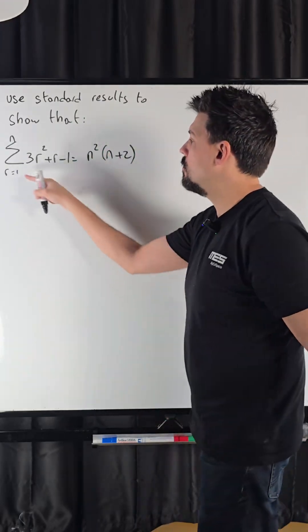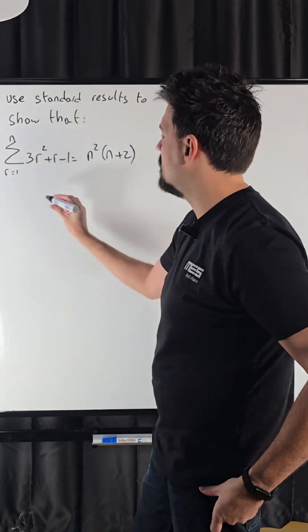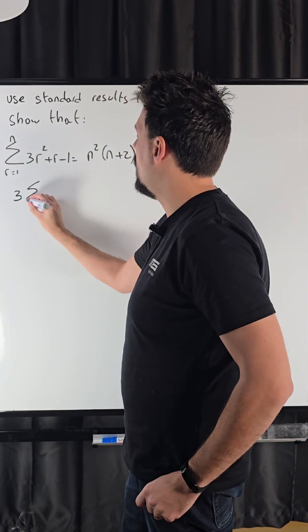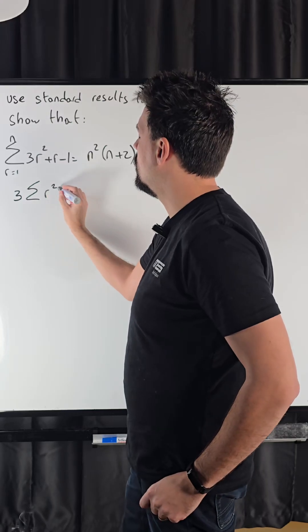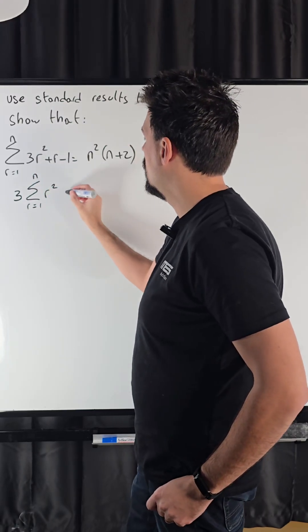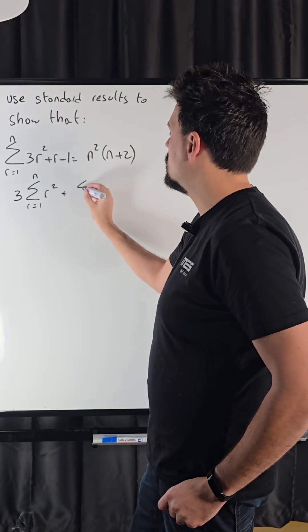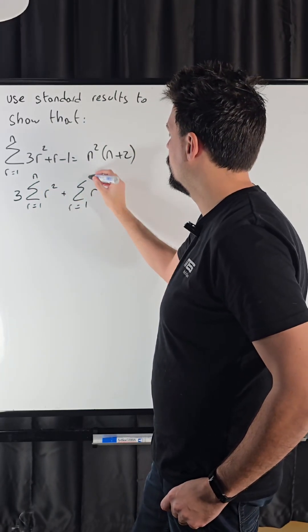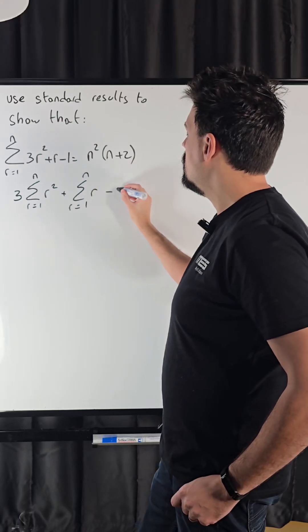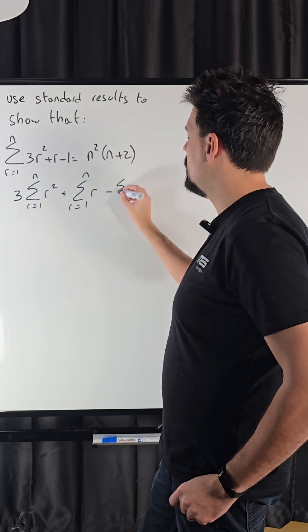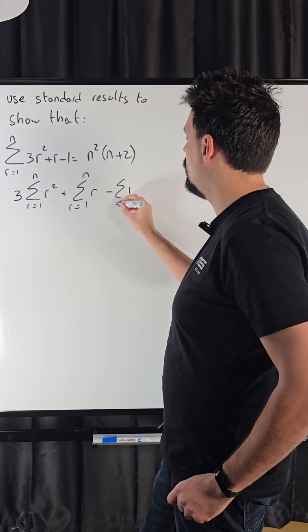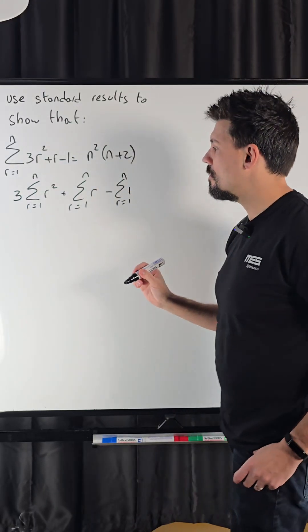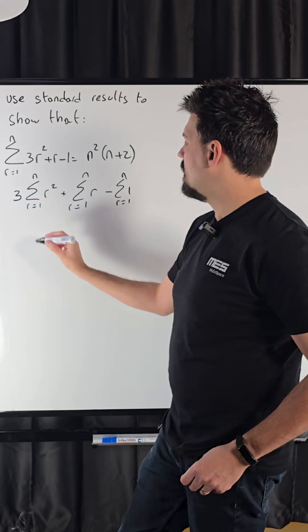What do we do? We're going to split this up. That becomes three times the sum of r squared, plus the sum of r, minus the sum of 1.